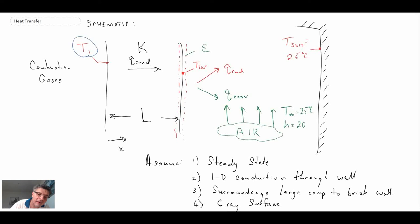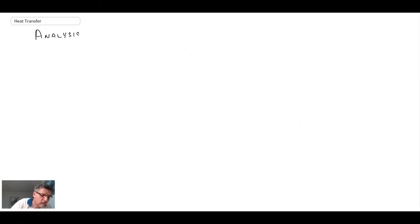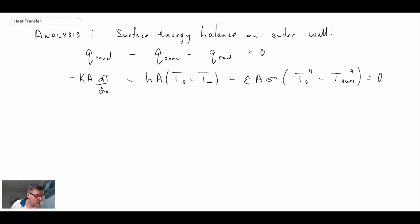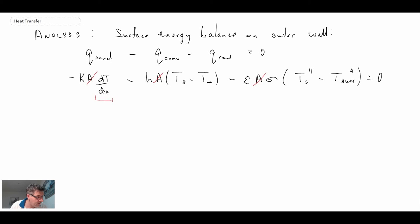We're now going to perform a surface energy balance on the outer wall, and that will enable us to come up with our equations. What's coming in is conduction, and what's going out is convection and radiation. So we have Fourier's law, Newton's law of cooling, and our radiative heat transfer equation. We can immediately cancel out the area because it's common to all terms, so area disappears. Then we expand the temperature gradient term.